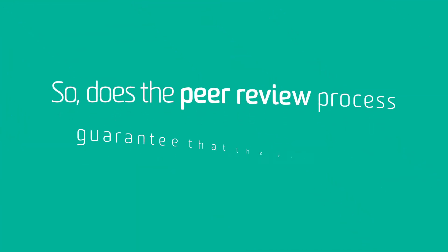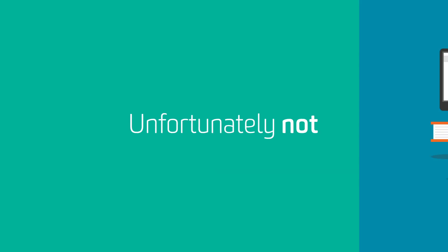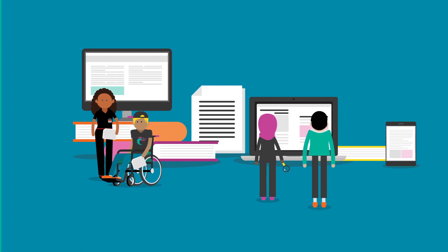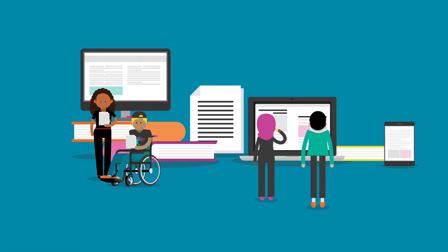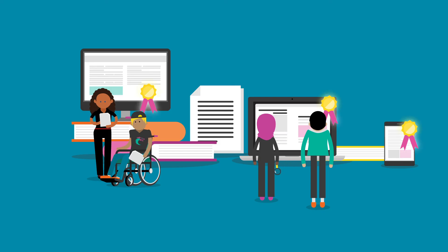So, does the peer review process guarantee that the published information is correct? Unfortunately not. It is an important part of the scholarly process, but peer reviewers cannot possibly check every aspect of the original work or redo the research, so incorrect or flawed information can be overlooked. However, the peer review process helps to strengthen the credibility of information so that the research can be taken seriously.